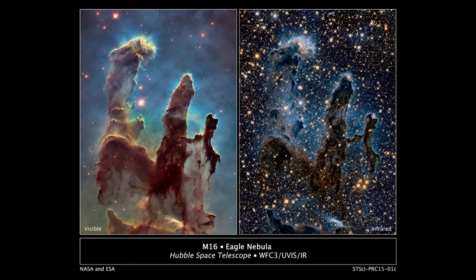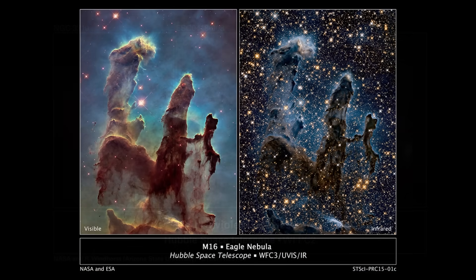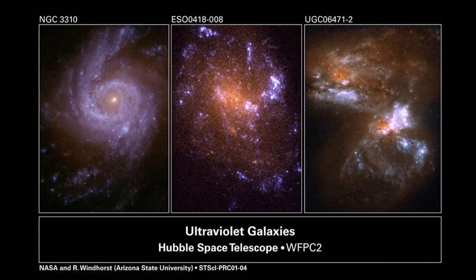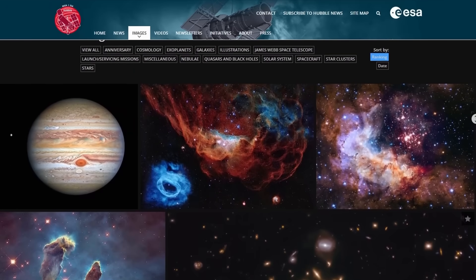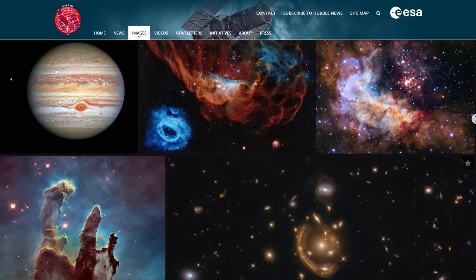Hubble has taken a lot of nice pictures, but these pictures are taken between the near-infrared and ultraviolet range. So much of this range is in the visible spectrum. Now this is very useful if you want to take pictures in the colors we're used to, but here's the problem.